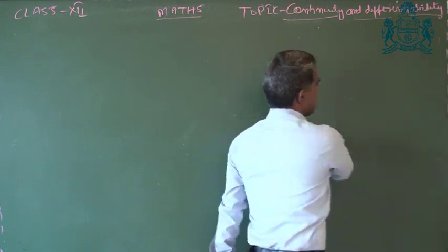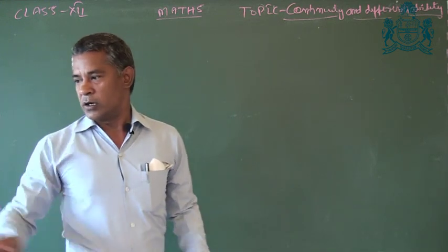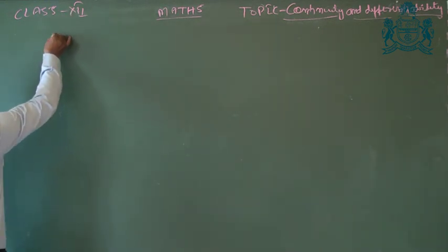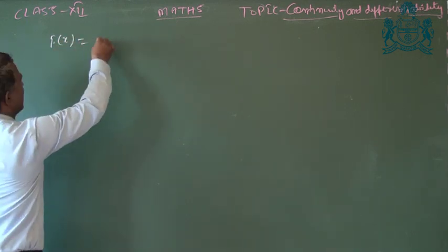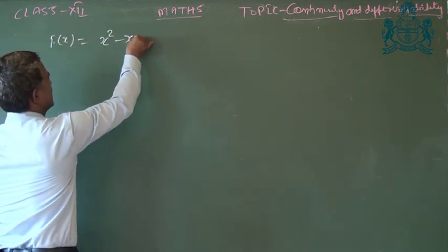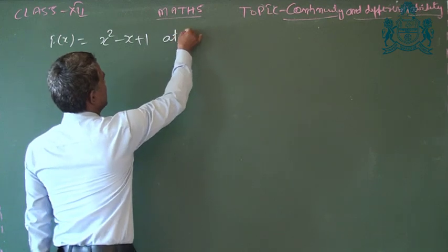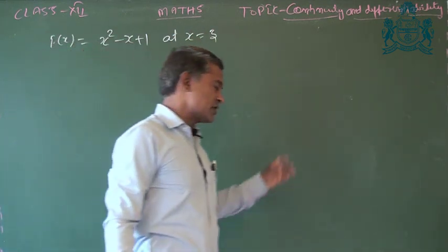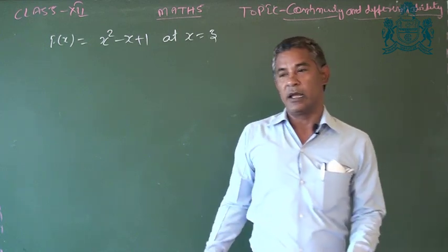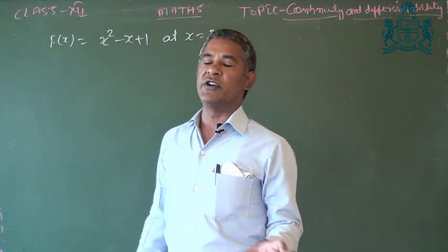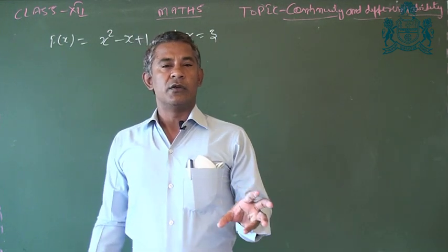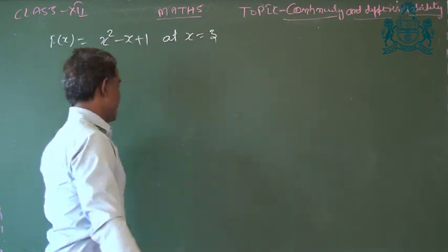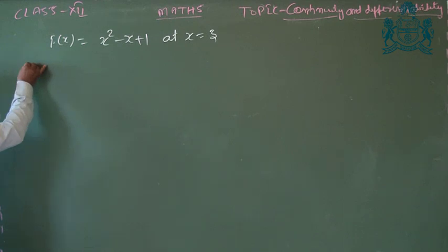We have one question: f(x) = x² - x + 1, and at x = 3 we need to check whether the function is continuous or not. First, we need to know the condition for a continuous function.